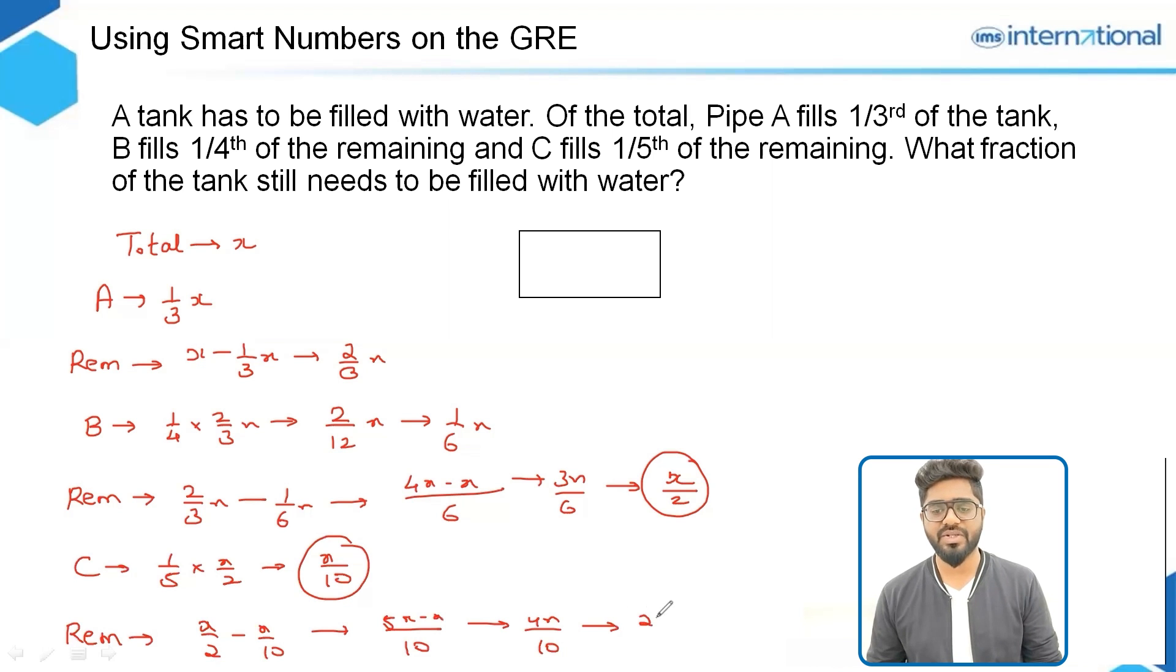In simplest form this can be written as 2x over 5. So this part is still left to be filled with water. The fraction is 2x over 5 divided by x, since we are taking the total value as x. So the answer to this question is 2/5.